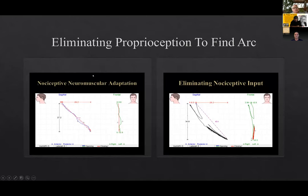This is a little example of how you can eliminate proprioception to find the true arc. This is the patient's opening and closing — done a couple of times. You can see he opens in a straight line, which is totally non-physiologic, and closes on that straight line. You'll find this very common in patients that are Class I deep bite or Class II Division I deep bite. They will train themselves to hit this landing pad no matter what.